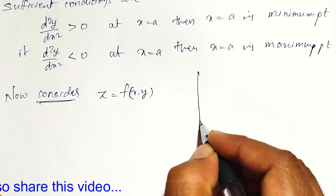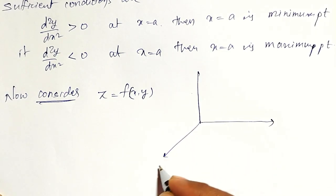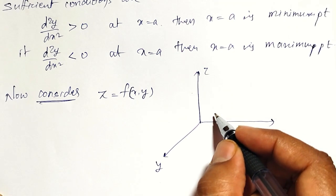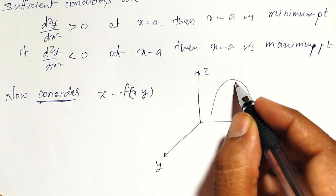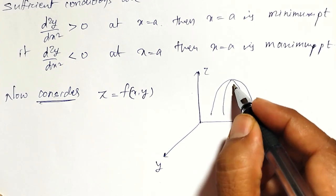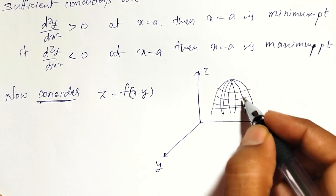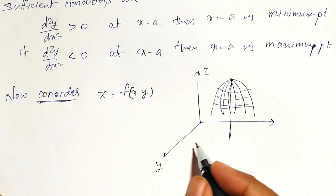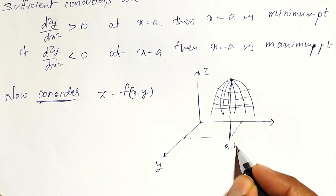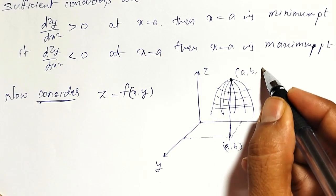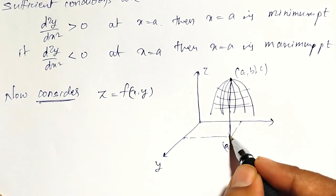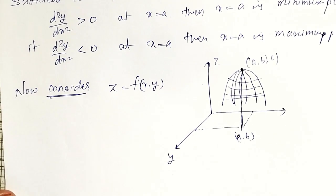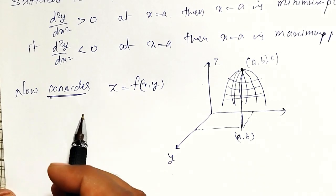For example, there is a surface in three dimensions. This is the surface, and this is the maximum point. Its projection is falling in the x-y plane. Say this is my point a, b — and this point becomes a, b, c. At point a, b, the maximum point is there. Similarly, for a minimum point, it will be on the bottom side.